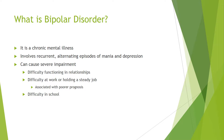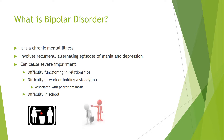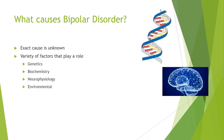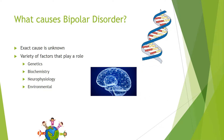Bipolar disorder is a chronic mental illness. It involves recurrent alternating episodes of mania and depression. It can cause severe impairment including difficulty functioning in relationships, difficulty at work or holding a steady job, which is also associated with a poorer prognosis, and difficulty in school. The exact cause of bipolar disorder is unknown, but there are a variety of factors that may play a role. These include genetics, biochemistry, neurophysiology, and environmental factors.